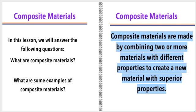Composite materials are made by combining two or more materials with different properties to create a new material with superior properties.